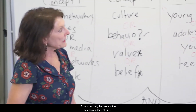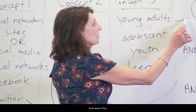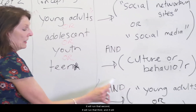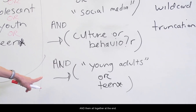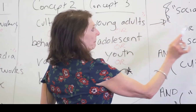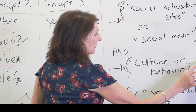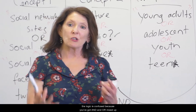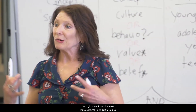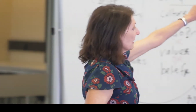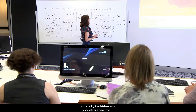What actually happens in the database is that it will run the first bracket search first, the second one second, the third one third, and then AND them all together at the end. If you don't do that and just put everything in without brackets, the logic is confused — you've got AND and OR mixed up and the database doesn't know what to do. Using brackets tells the database which concepts and synonyms belong together.